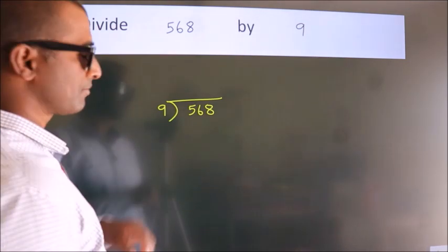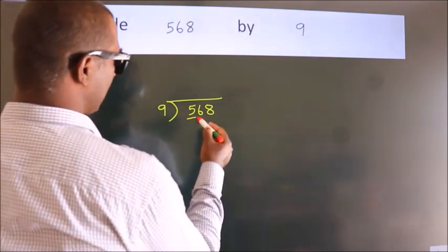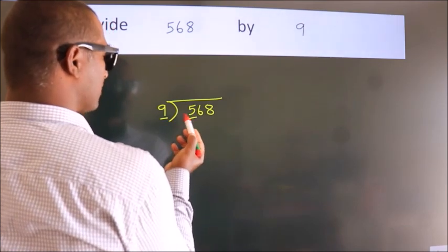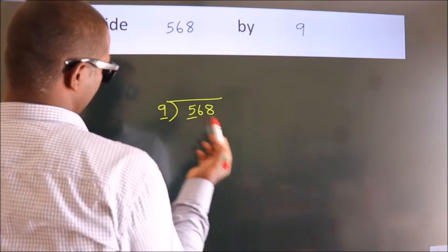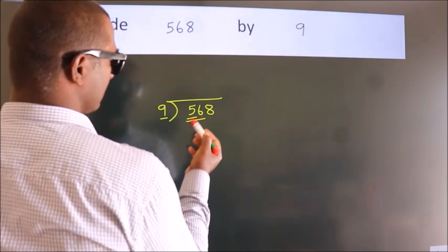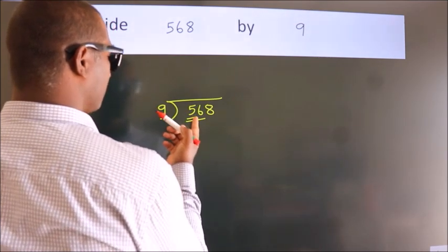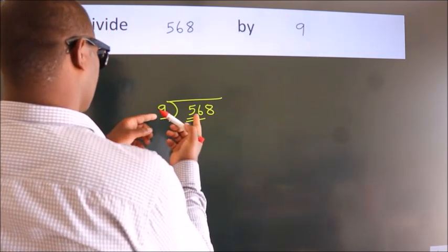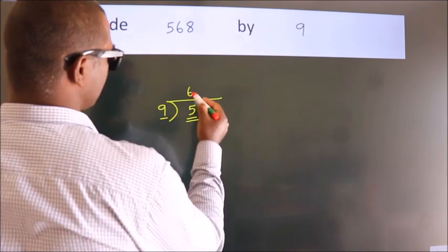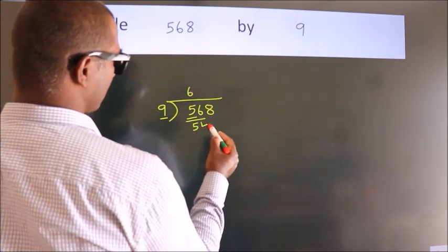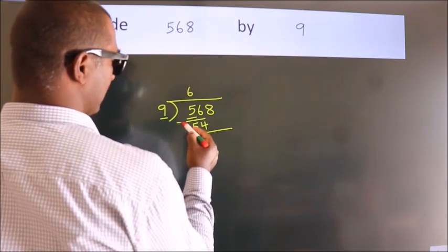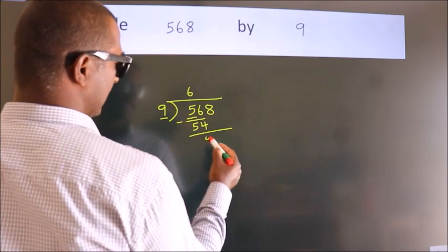Next, here we have 5, and here 9. 5 is smaller than 9, so we should take two numbers: 56. A number close to 56 in the 9 times table is 9 sixes, 54. Now we subtract and we get 2.